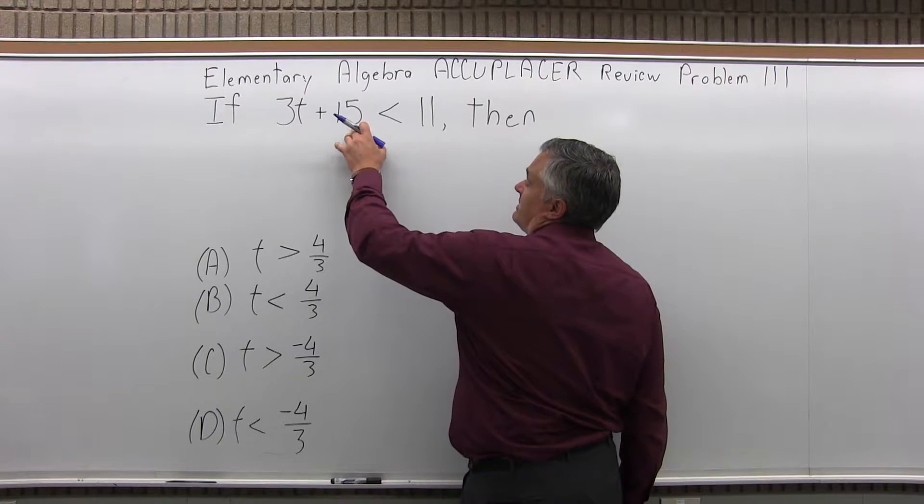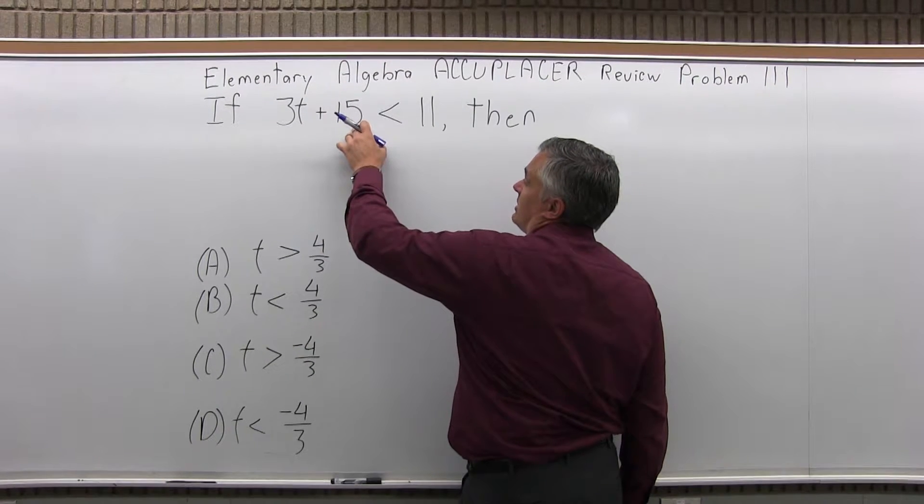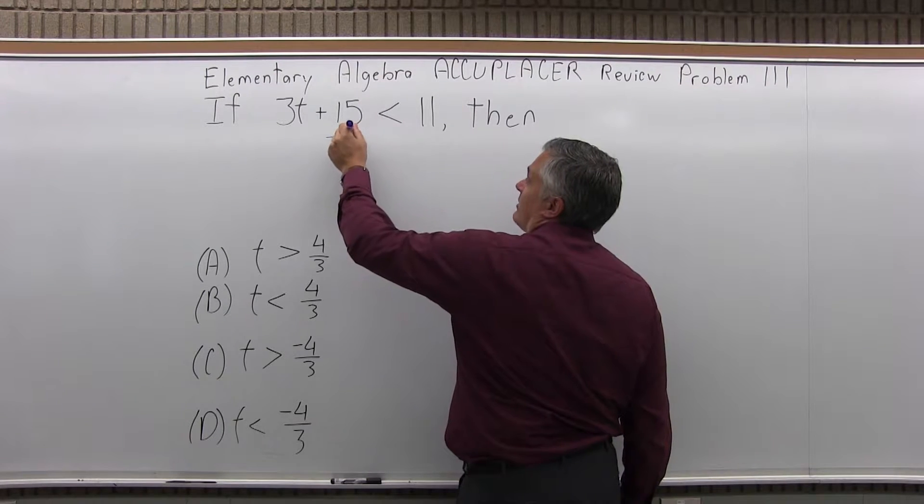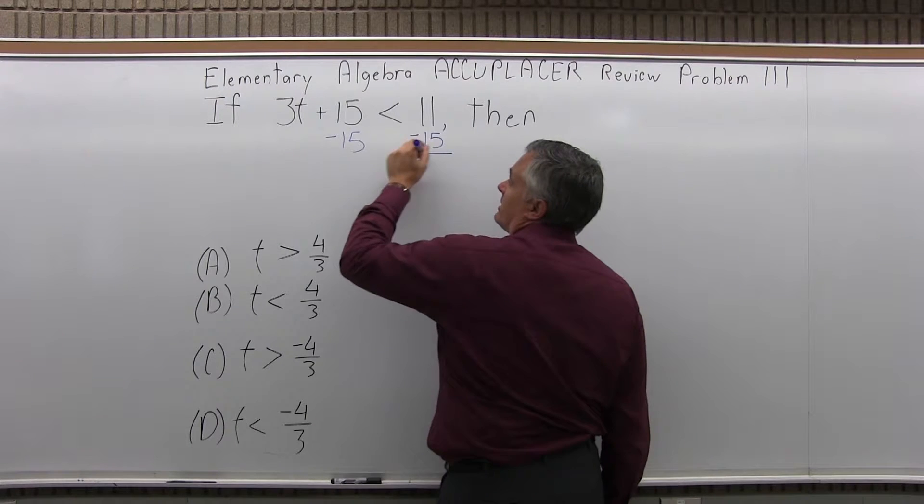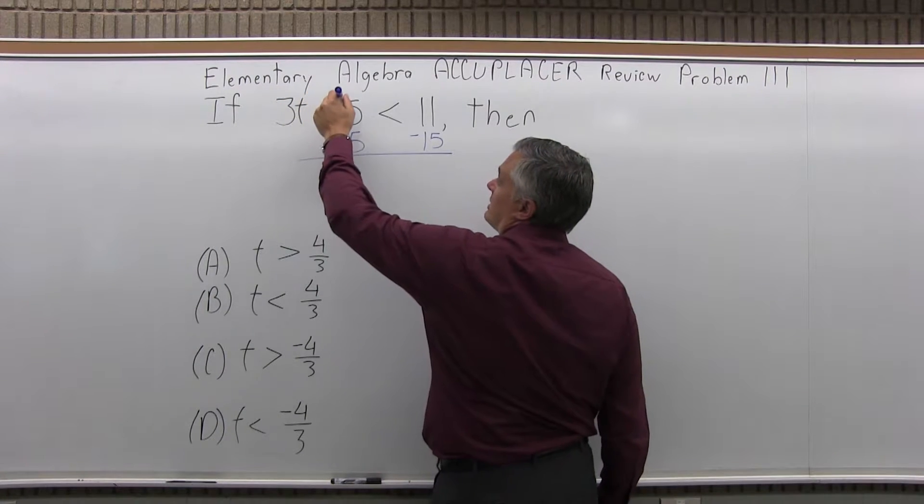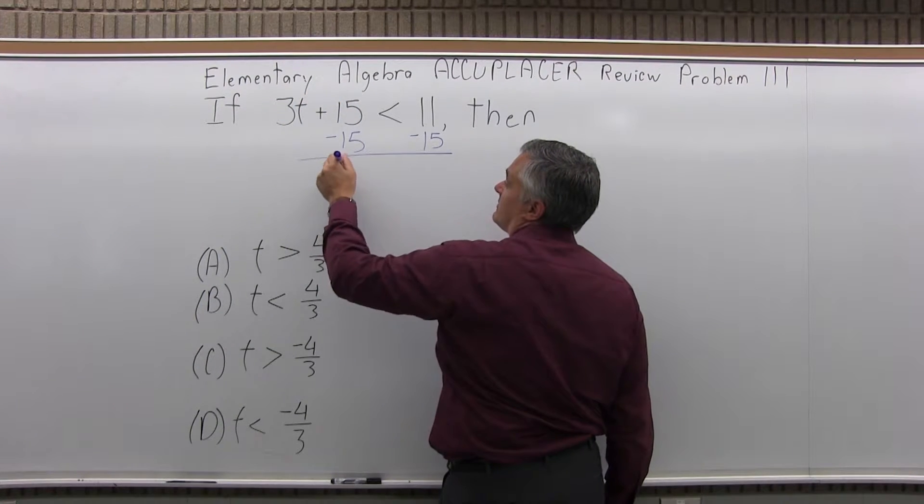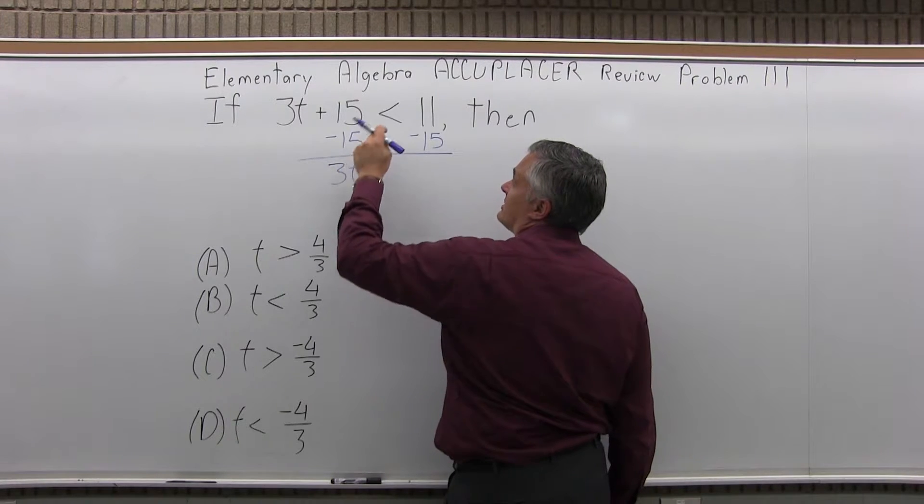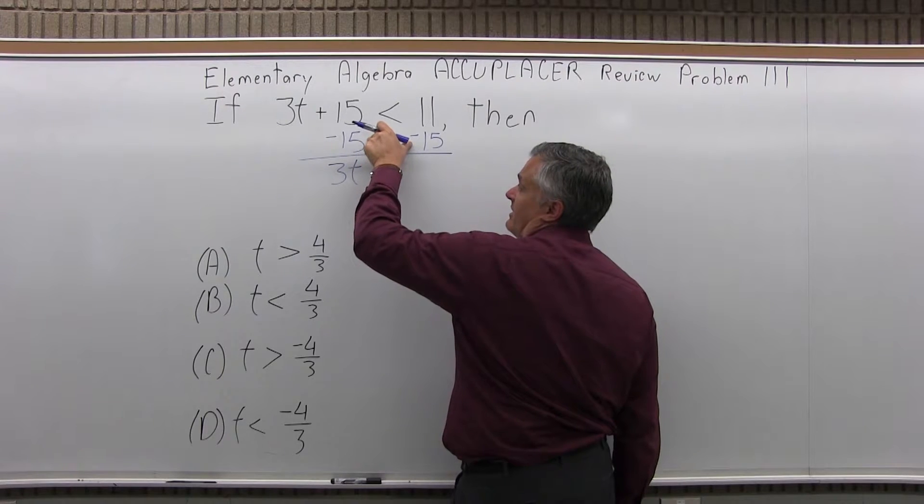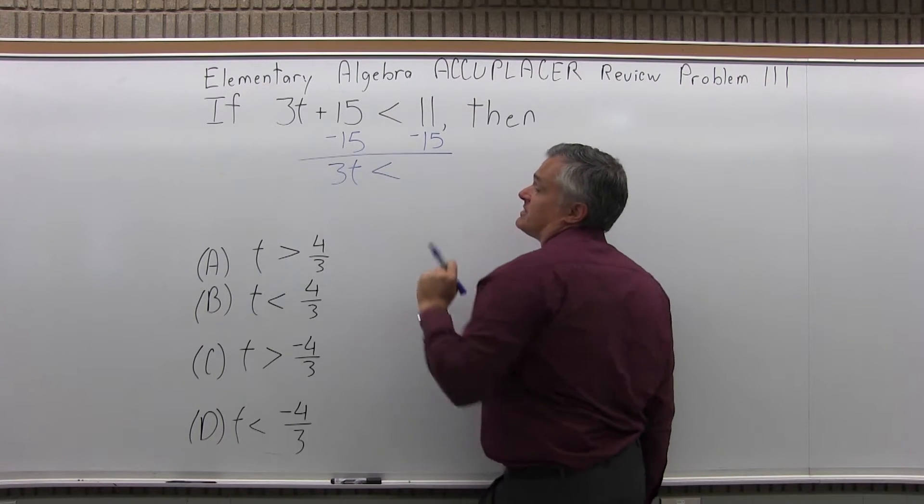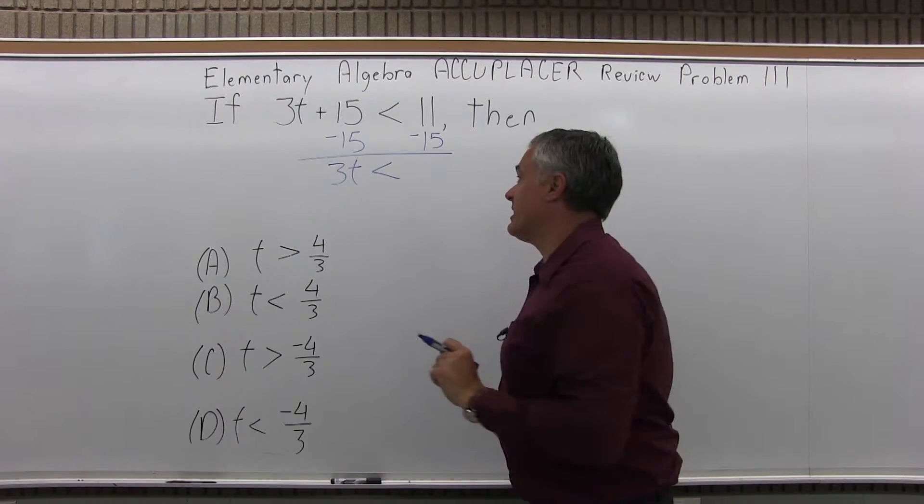So let me start by canceling the 15 on the left side of my inequality. So I will subtract 15 from both sides of the inequality. So 3t plus 15 minus 15, the plus 15 minus 15 cancels. The symbol will point in the same direction. Again, I didn't multiply and divide by a negative. I added a negative, but I don't have to flip the symbol for that. Only multiply and divide by a negative.